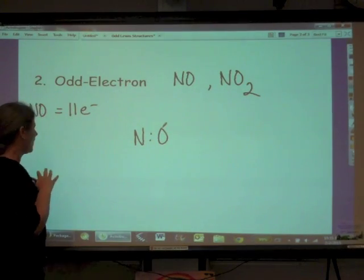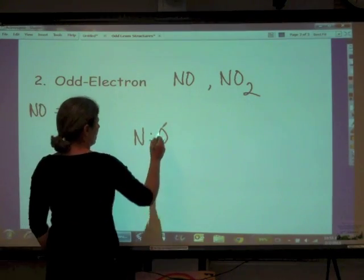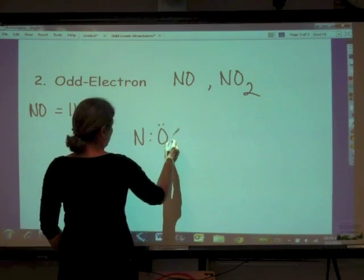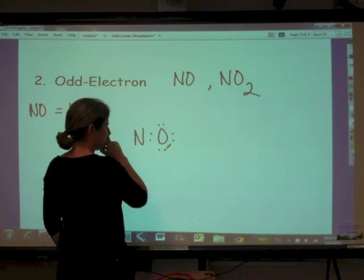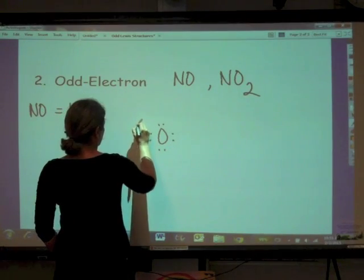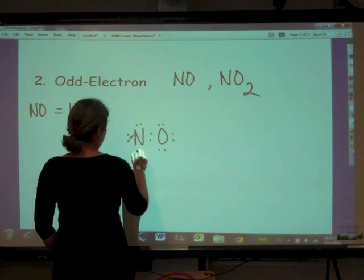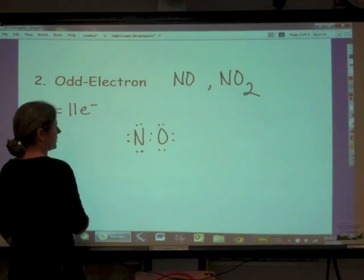So we've got a nitrogen and an oxygen. Now, oxygen always, always follows octet. So two, four, six, eight. And then let's just try to fill in with the nitrogen. Two, four, six, eight. And so then what do we have total?